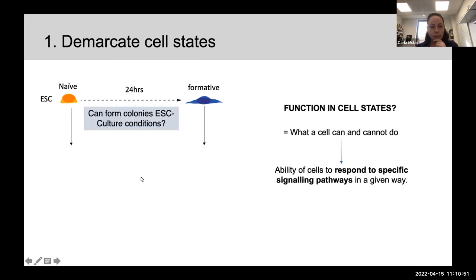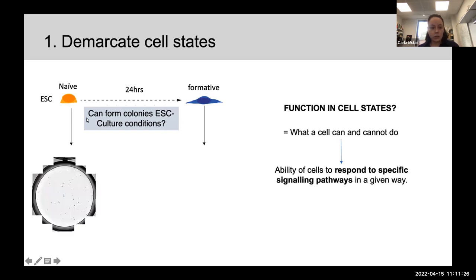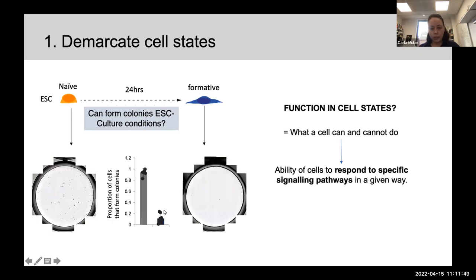What makes a stem cell different from a differentiated cell is that when you give a stem cell the right signals, it behaves in a particular way, which is completely different once the cell differentiates. For example, looking at the naive-to-formative transition in mouse embryonic stem cells — naive and formative are the names for two well-characterized cell states — if you take naive embryonic stem cells and wait just 24 hours, the cells have changed how they respond to signals. In culture conditions where stem cells normally thrive, naive cells form colonies, but formative cells at 24 hours have lost the ability to form colonies.